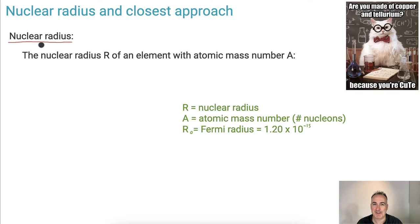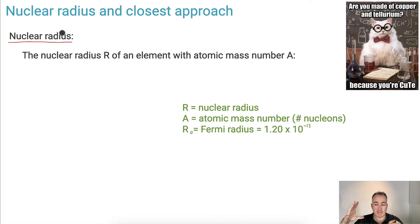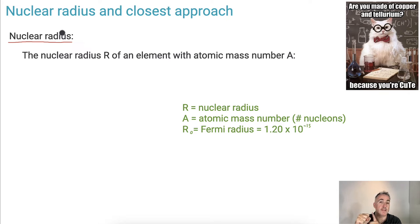Let's start off with nuclear radius. What do we mean by this? We don't mean the whole distance of the entire atom, because there are electrons floating around there. What we mean is how big is the actual nucleus — the part that contains the protons and neutrons. That radius is what we're talking about, and the atomic mass number is going to be the important thing here.